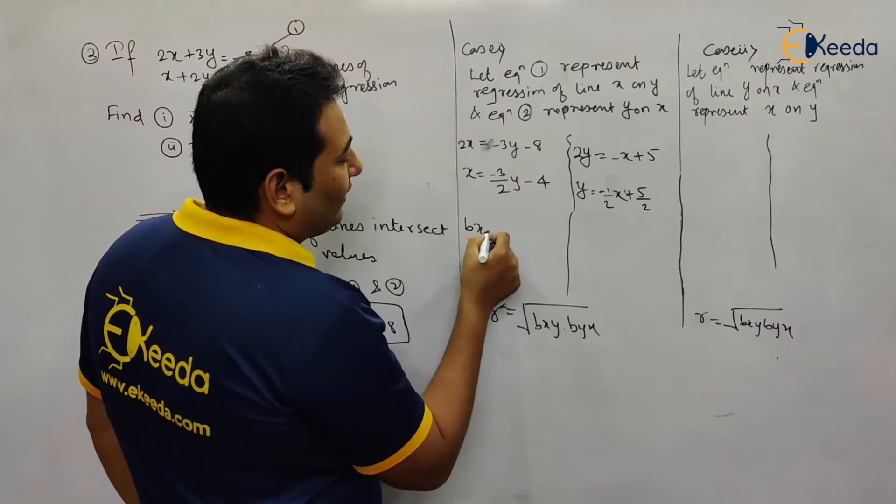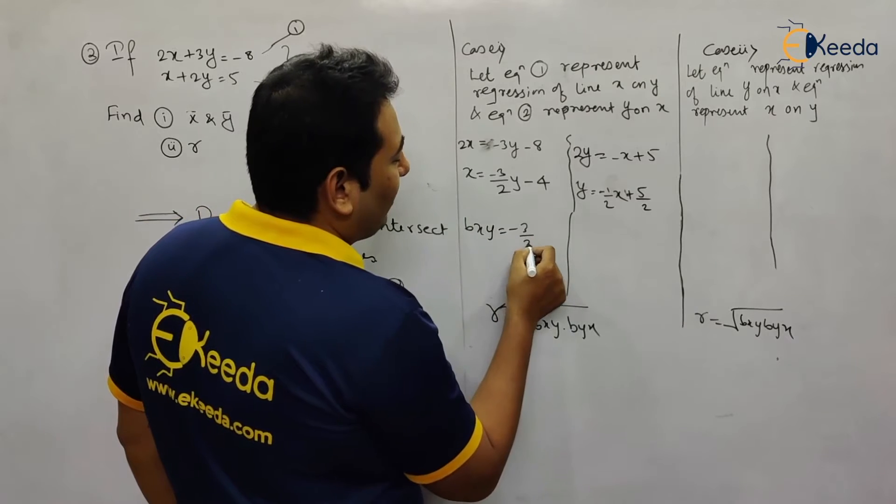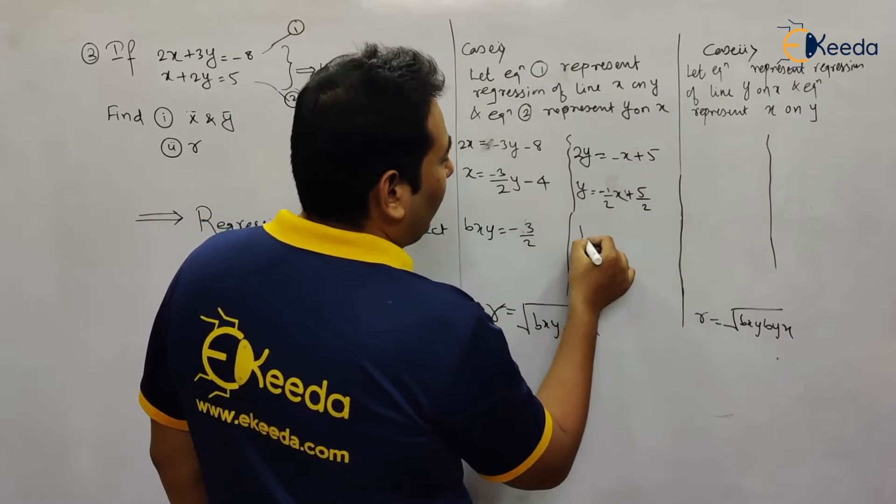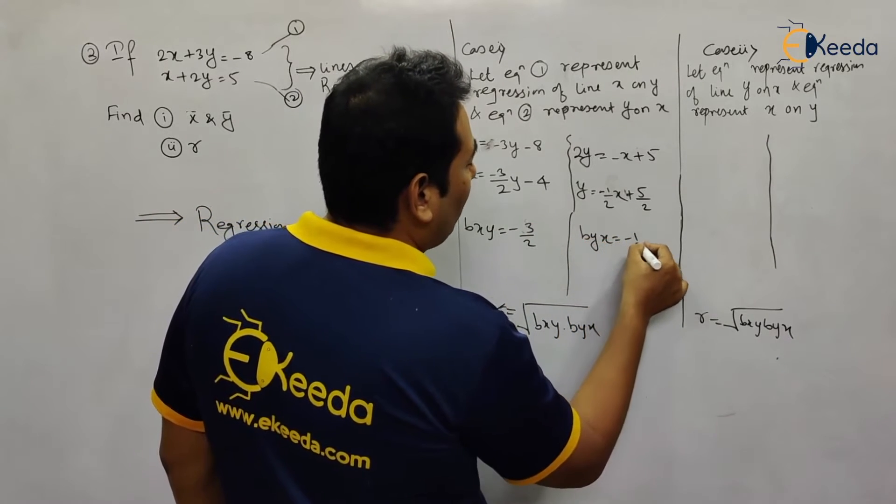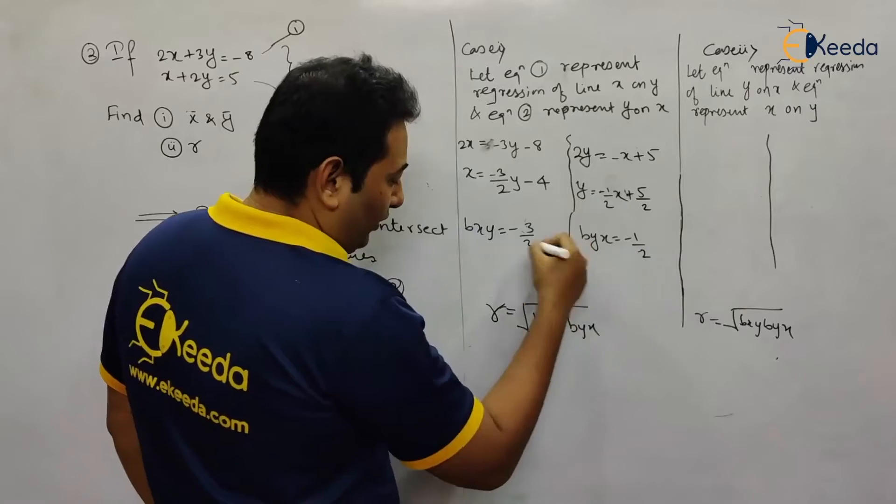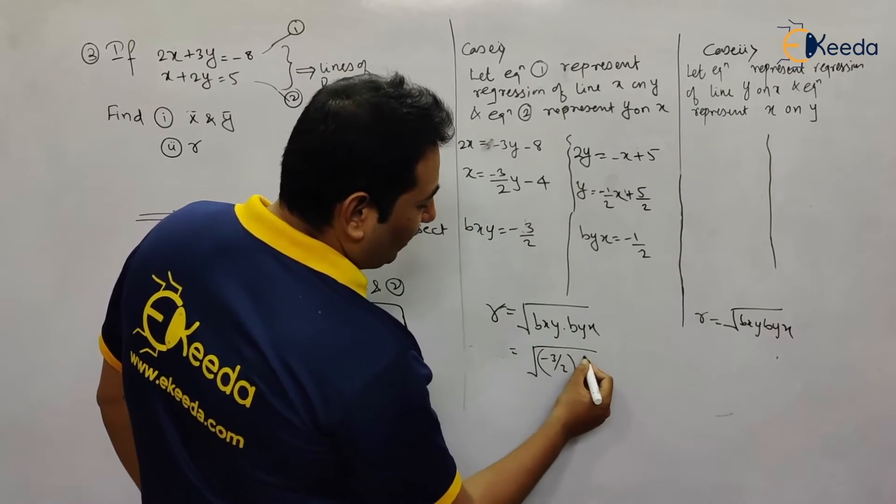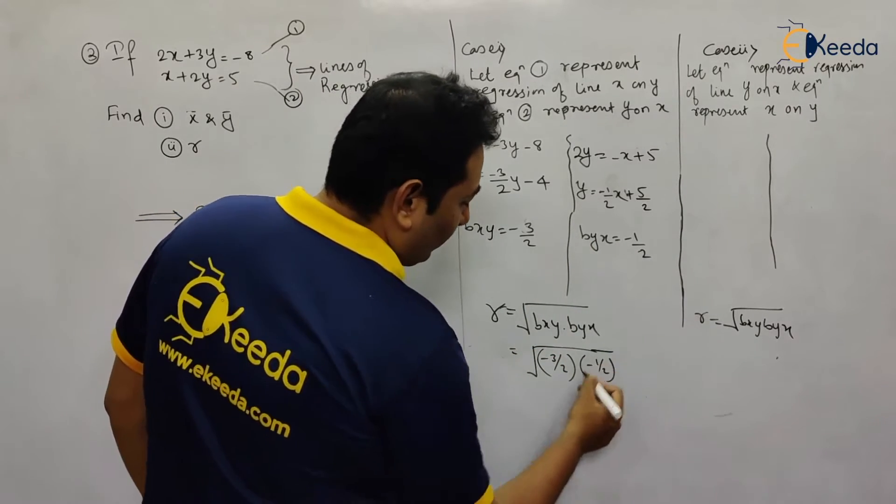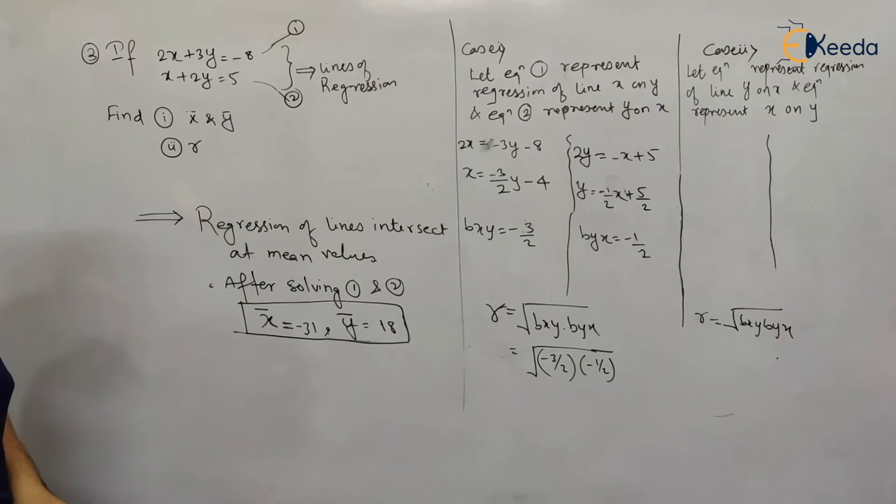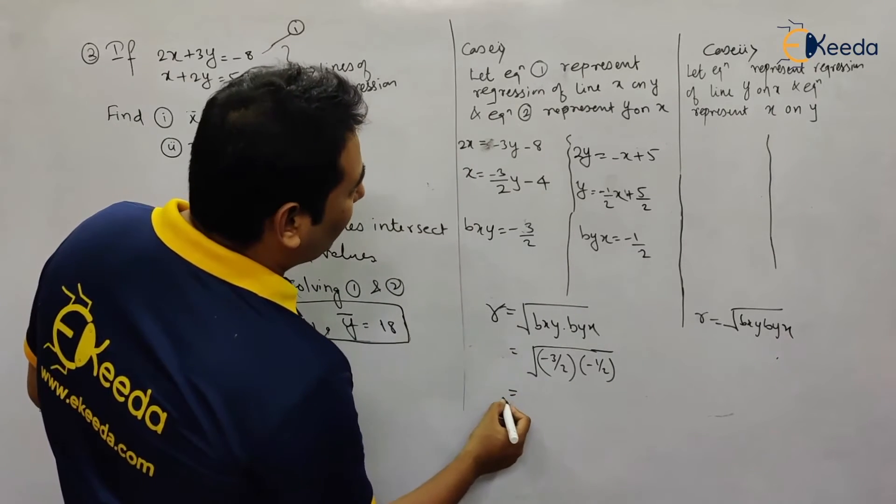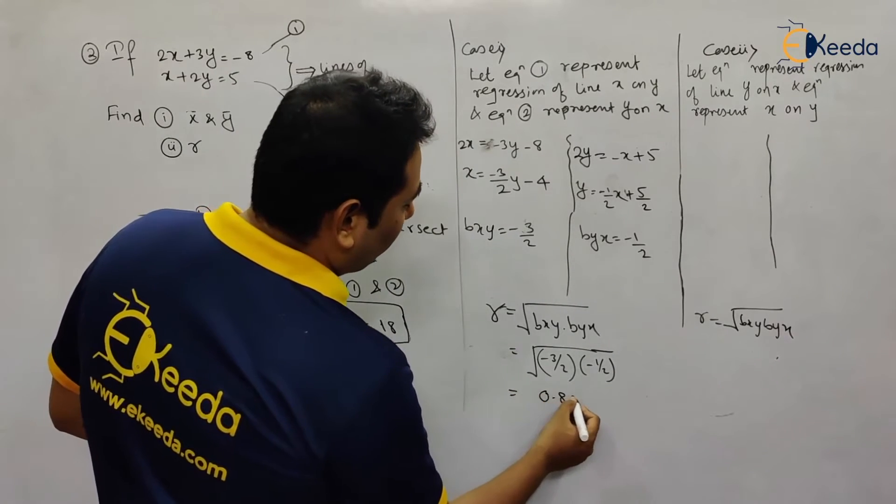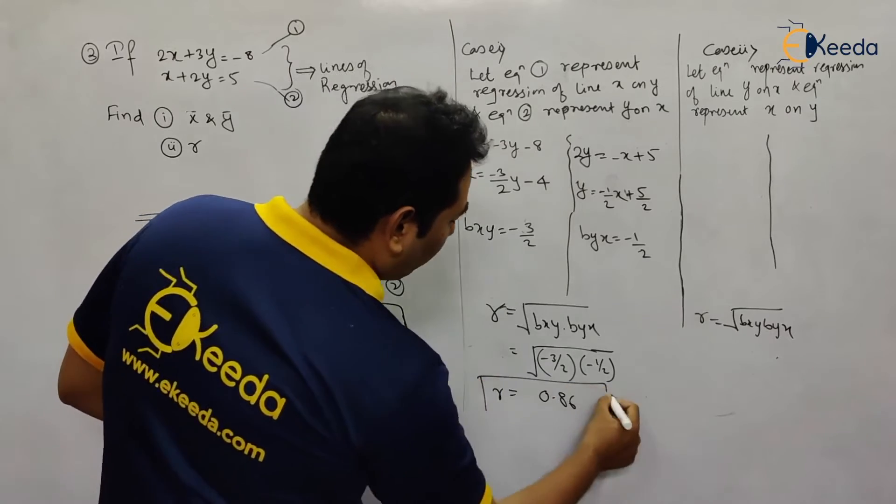So from this, bxy equals -3/2 and byx equals -1/2. If you multiply -3/2 into -1/2, that becomes 3/4, and if you solve, you'll get the value of r as 0.86. Try it and you'll get your result.